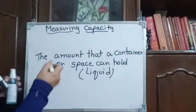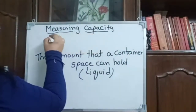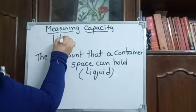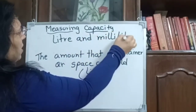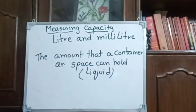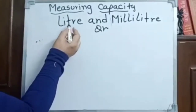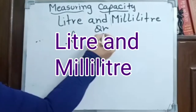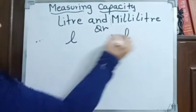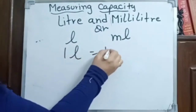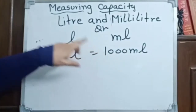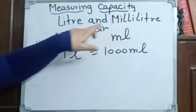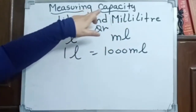So, measuring capacity means milliliter and liter. Liter is the bigger one. These are the two units for capacity. The symbol for liter is L, and for milliliter we have ml. And one liter equals 1000 milliliter. So if we have 5 liters — liters and milliliter — these are the units for measuring capacity.